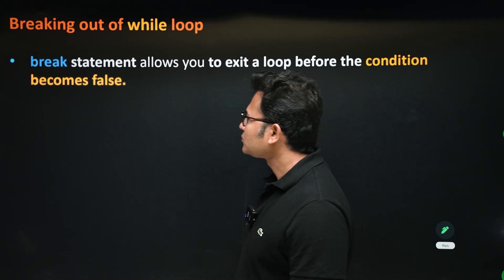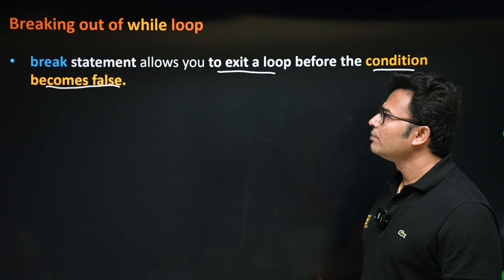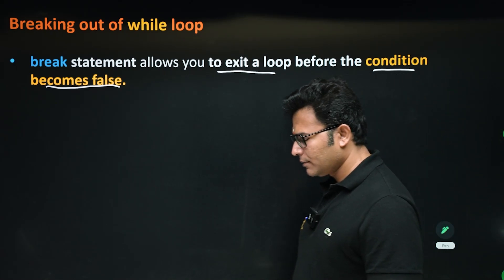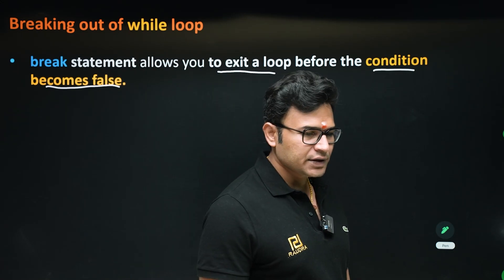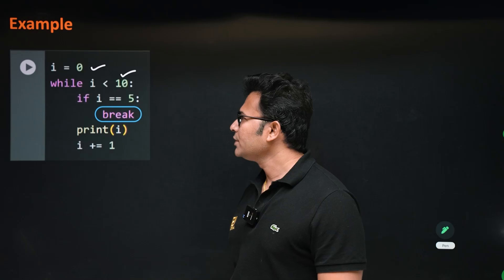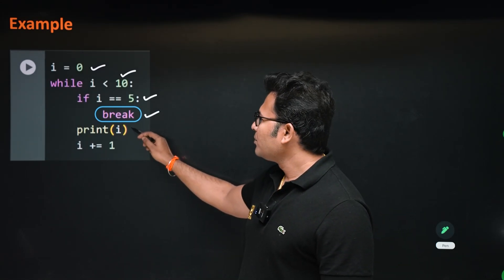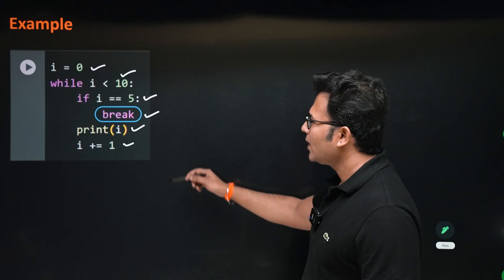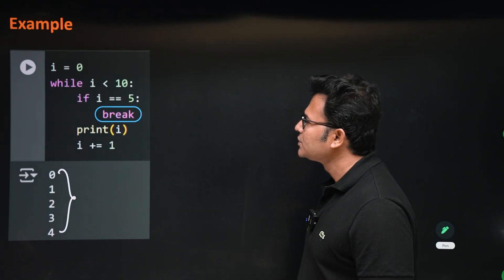The break statement allows you to exit a loop before the condition becomes false. Even before the while loop exits naturally based on the condition, if you want to exit in between you can use break — you've already seen break in for loops; it's the same thing. For example, i starting from 0, while i less than 10, whenever i reaches 5 we write break. So 0 to 4 are printed properly, but whenever the value becomes 5 it breaks.